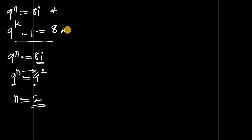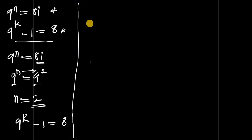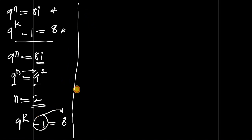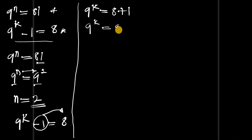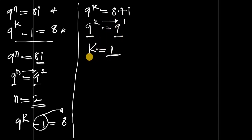Now for the second equation: 9 to the power of k minus 1 equals 8. Moving the 1 over gives 9 to the power of k equals 8 plus 1, which is 9 to the power of k equals 9, or 9 to the power of 1. Comparing exponents gives k equals 1. So we have n equals 2 and k equals 1.